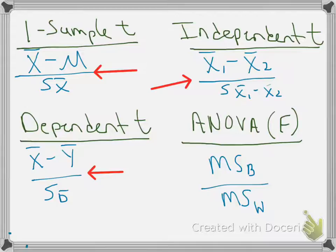And finally, perhaps the most confusing one in terms of its similarity to t-tests, is the f-value — the formula for the f-value. In this formula, we have the mean square between, that is the average squared difference between the sample means and the grand mean, divided by the mean square within — that's the average amount of squared difference between the individual scores and their sample means.